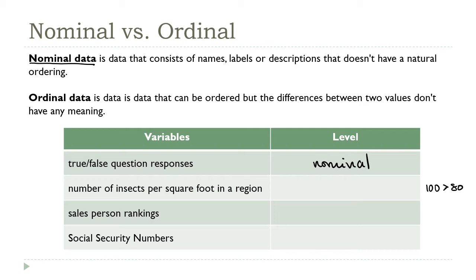I also get information from sorting sales rankings. Knowing that employee A comes before employee B tells me that in some sense employee A did better than employee B did. That makes this an ordinal variable. Finally, knowing that citizen A has a higher social security number than citizen B doesn't give me any way to compare the two, so this one is a nominal variable.